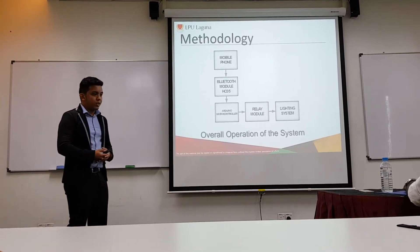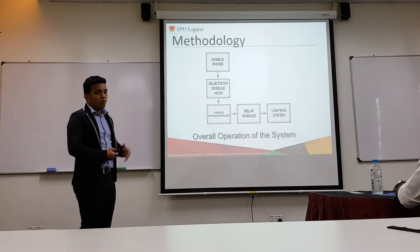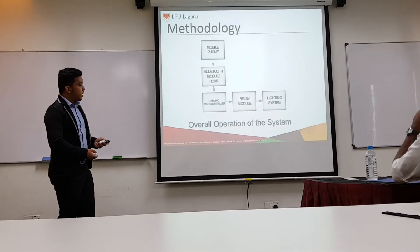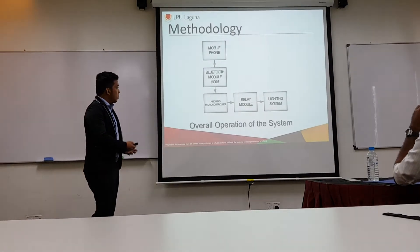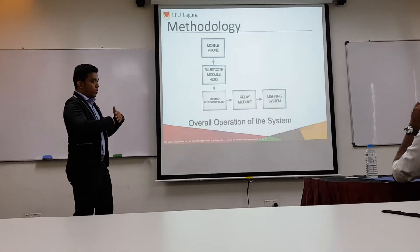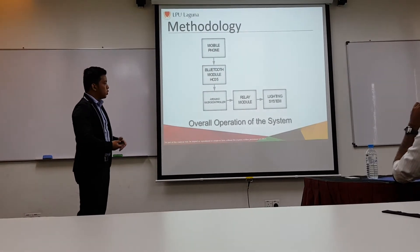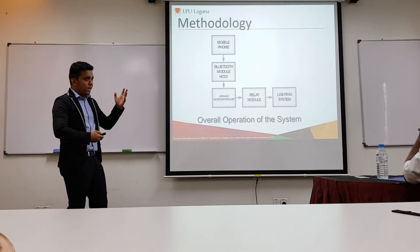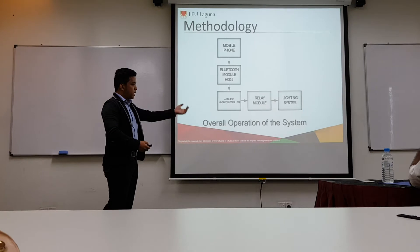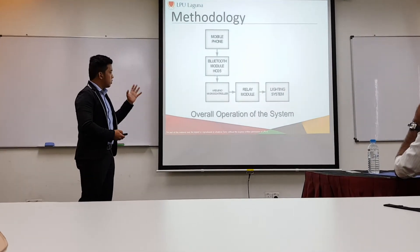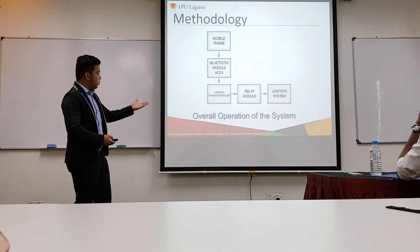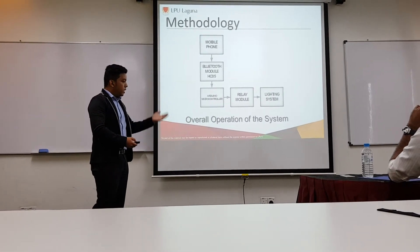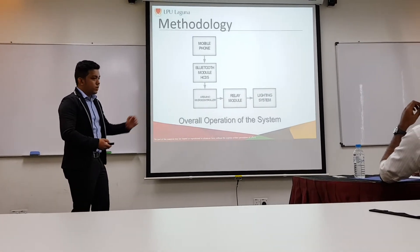Here's the overall operation of the system. We have first the mobile phone, which is the Android-based operating system smartphone. From the Android app, it will be interpreted and received by a Bluetooth module, HC-05. The Bluetooth module HC-05 converts the commands from the Android to the Arduino microcontroller, which processes the commands to the LED module. Then the LED module is connected to the lighting system.